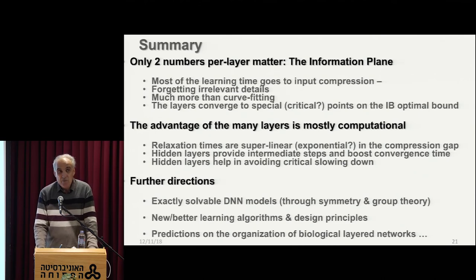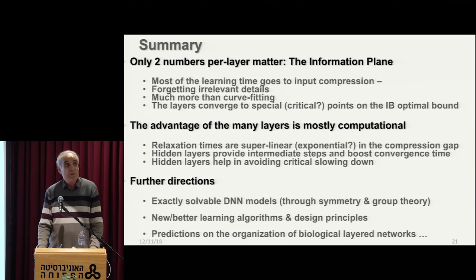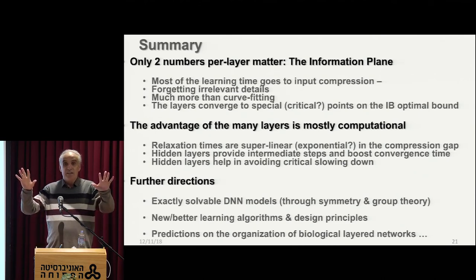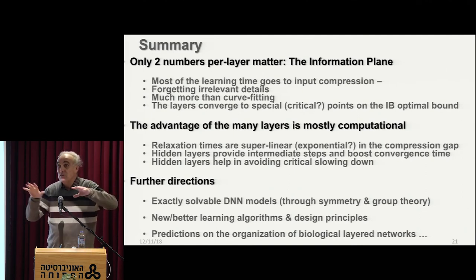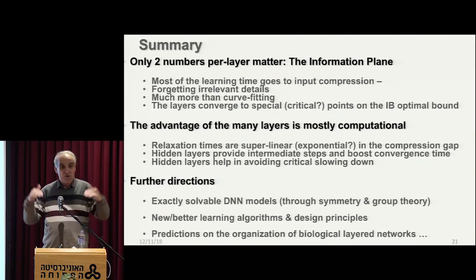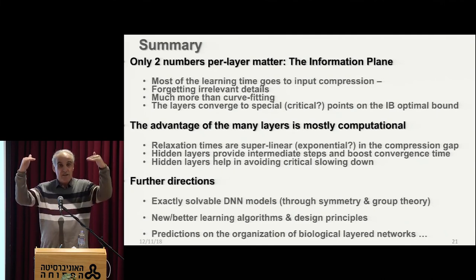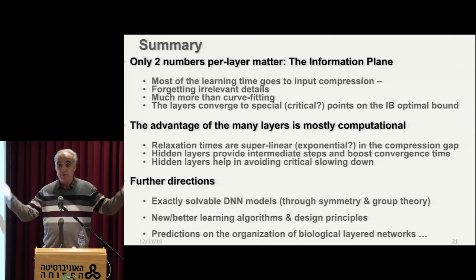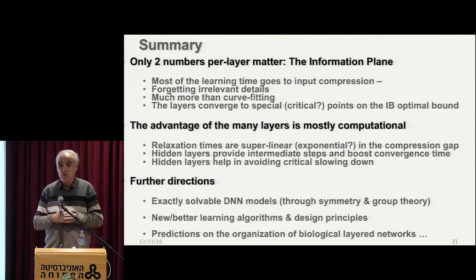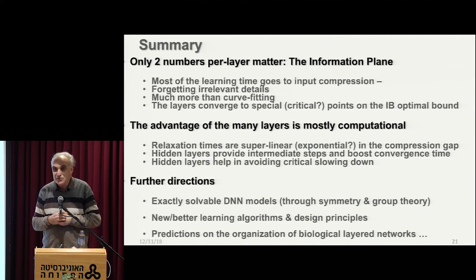The reason neural networks work so well is because stochastic gradient descent is spending most of the time on diffusion, which looks like a stupid thing to do, but this diffusion is actually compressing the representation and therefore improving the generalization. And therefore, don't try to get rid of it — if you stop too early without the diffusion, you won't generalize very well.